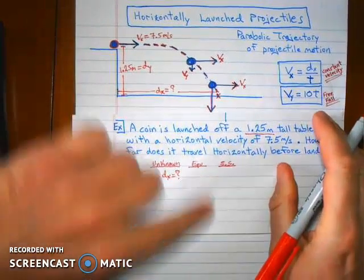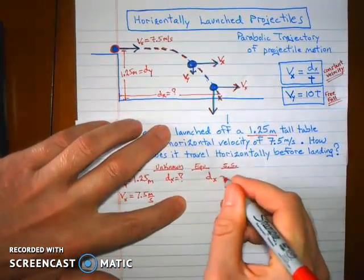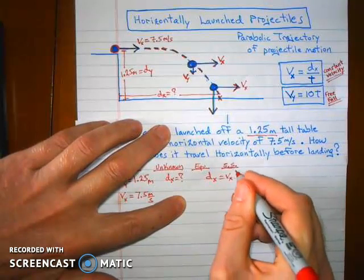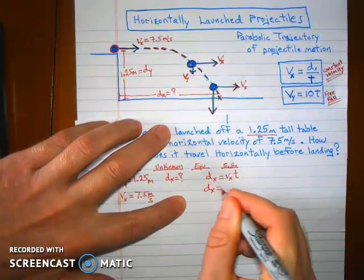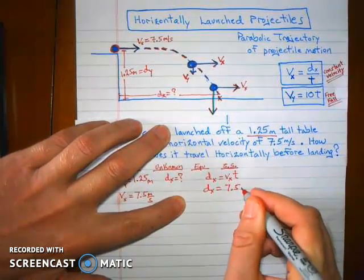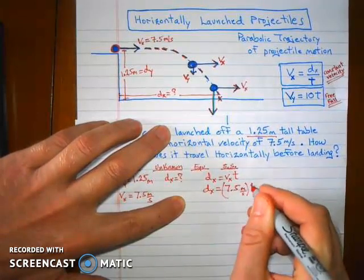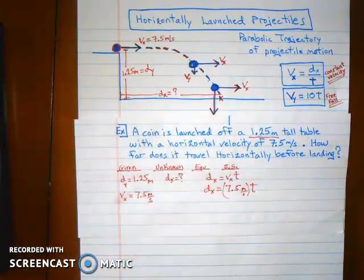So look at the equations. We have two equations. One equation is that the distance in the x direction equals the velocity in the x direction times time. So let's solve this equation. Distance in the x direction equals 7.5 meters per second times the time. Problem is we don't know the time that it's in the air. So what do we do?